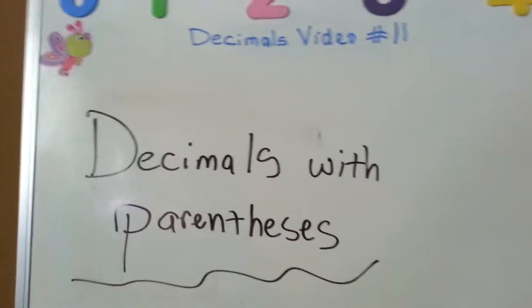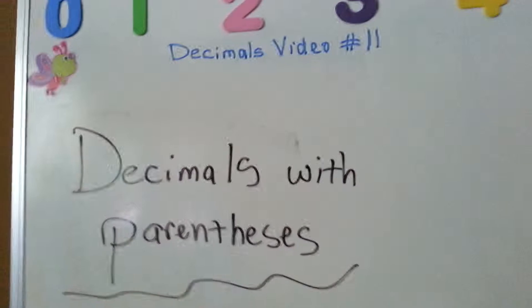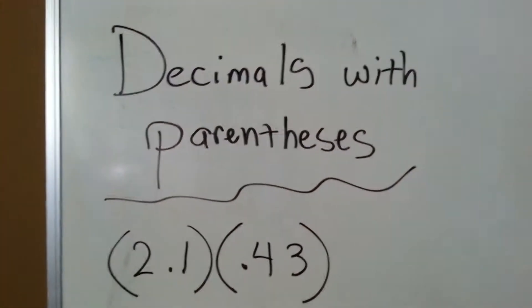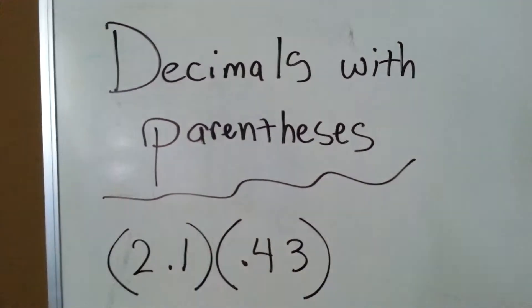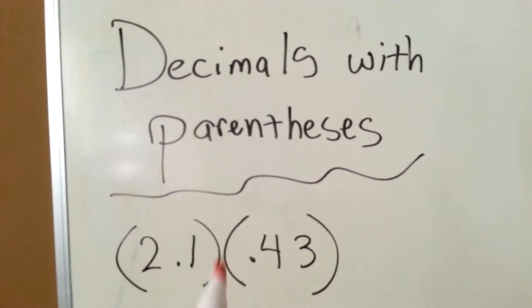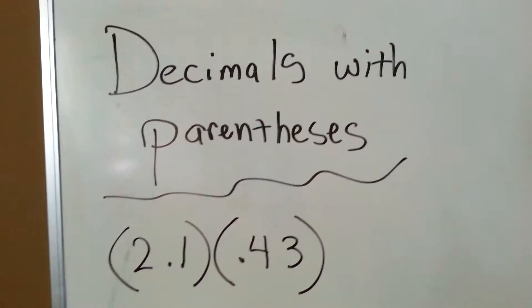Decimals with parentheses. When you see decimals with parentheses like this, side by side with no sign—add, subtract, multiply, or divide in between them—it means to multiply.